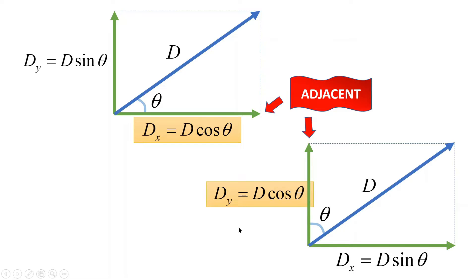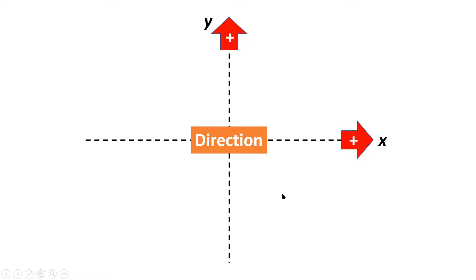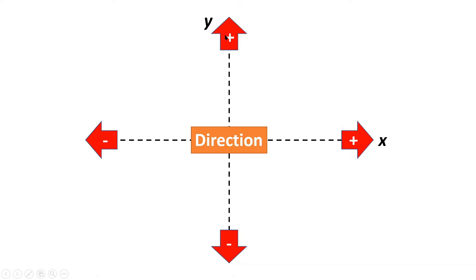Another very important thing about vectors is direction. We use positive and negative signs to determine direction. The direction to the right is positive; the direction to the left is negative. For the Y component, direction upward is positive and direction downward is negative. Always apply the correct sign when you write the components.